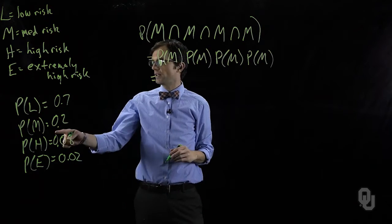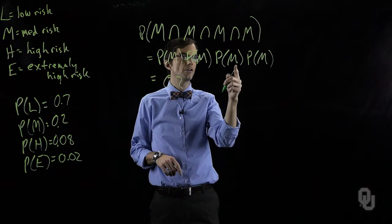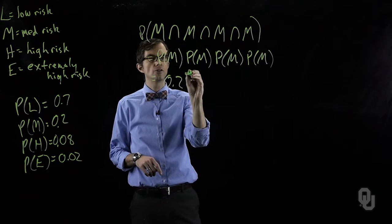We know what the probability of a medium risk project is, that's just 0.2. That's 0.2 times 0.2 times 0.2 times 0.2, which is 0.2 to the fourth.